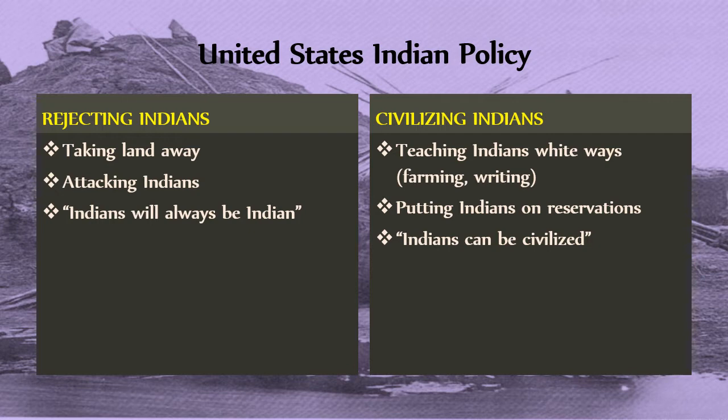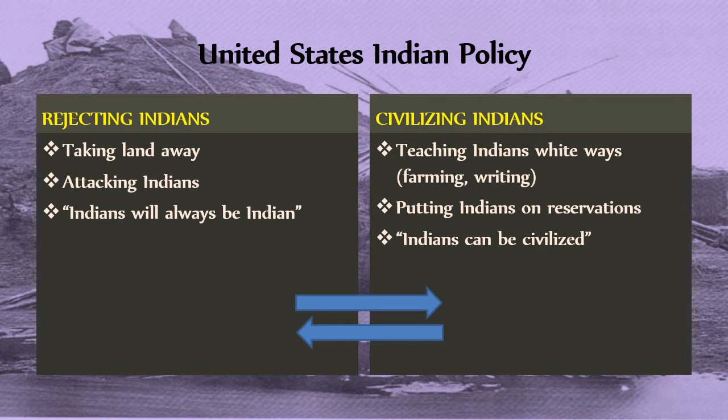Both policies tend to go back and forth — sometimes more rejection is seen, sometimes more civilizing — and the US doesn't have a consistent approach policy-wise until more recent times. Which is better? Rejecting means probably killing or eliminating you; civilizing means deciding that what makes you who you are is not acceptable and needs to be driven out. So neither policy is particularly good if you are a native person.